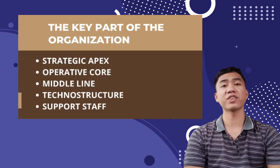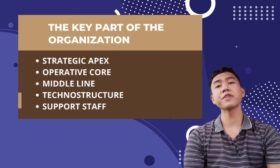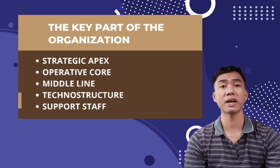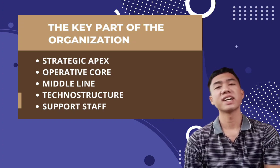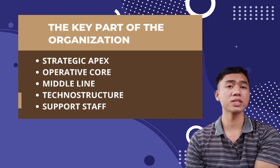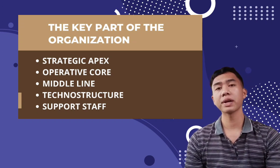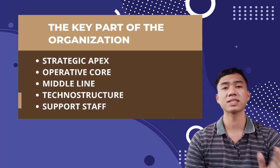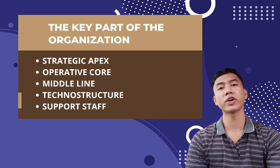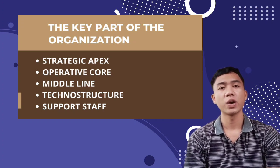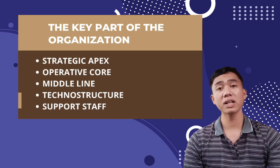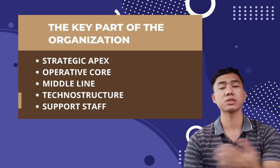Let us now proceed to the key parts of an organization. The first is the strategic apex — the top management and its support staff. In school districts, this is the superintendent of schools and administrative cabinet. We also have the operative core: the workers who actually carry out the organization's tasks. Teachers constitute the operative core in school districts. The middle line refers to middle and lower level management; principals are the middle level managers in school districts.